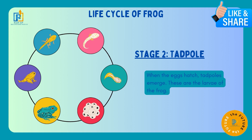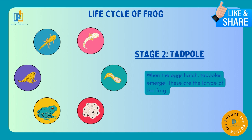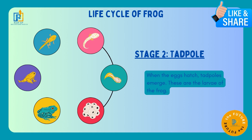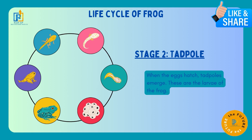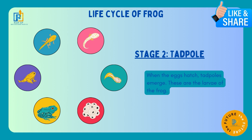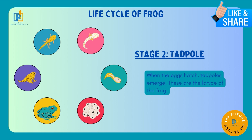Tadpoles bhoat tiny hote hain, bhoat thread ki tarhan ke hote hain — lambe aur patle. Egg se ek halka sa tadpole nikal raha hai, halki si thread si nikal raha hai. Second stage mein woh halka sa sliny, lamba, aur tiny hai. Woh ek lambi shakal mein, thread ki tarhan ka, bariq aur patla hota hai.